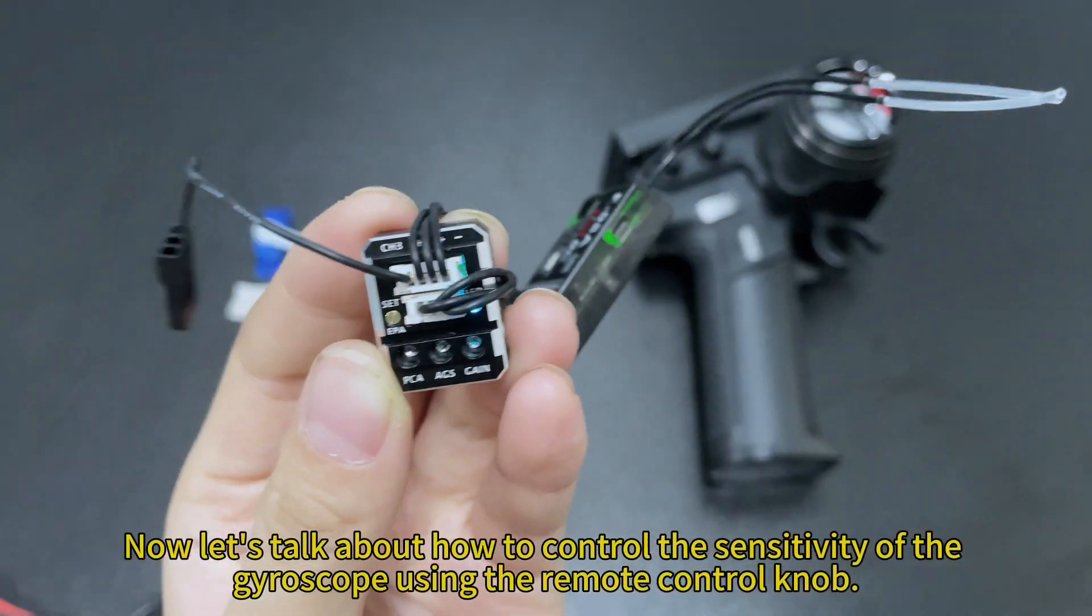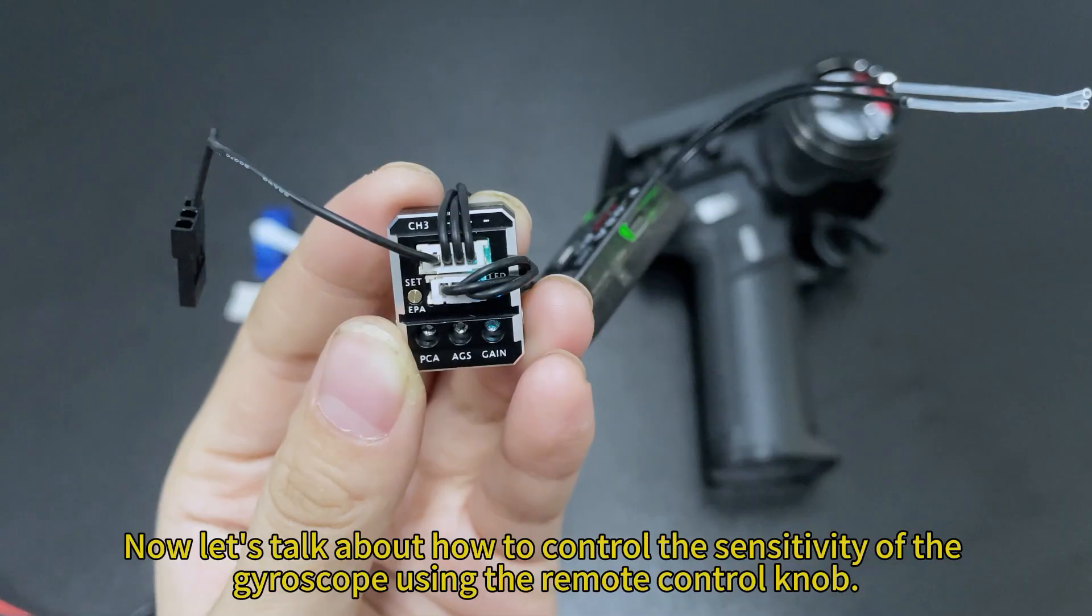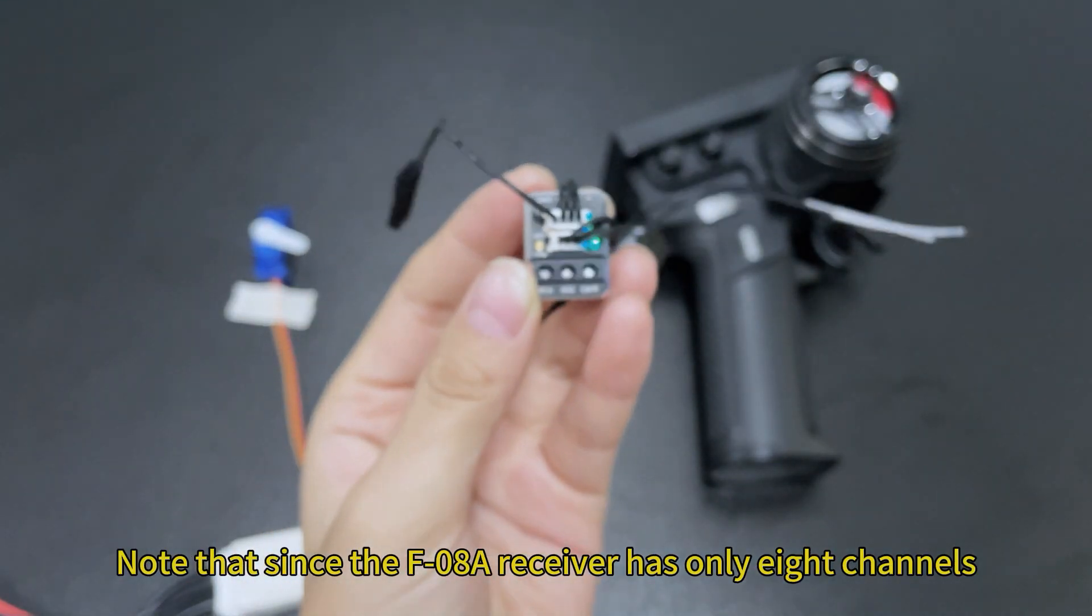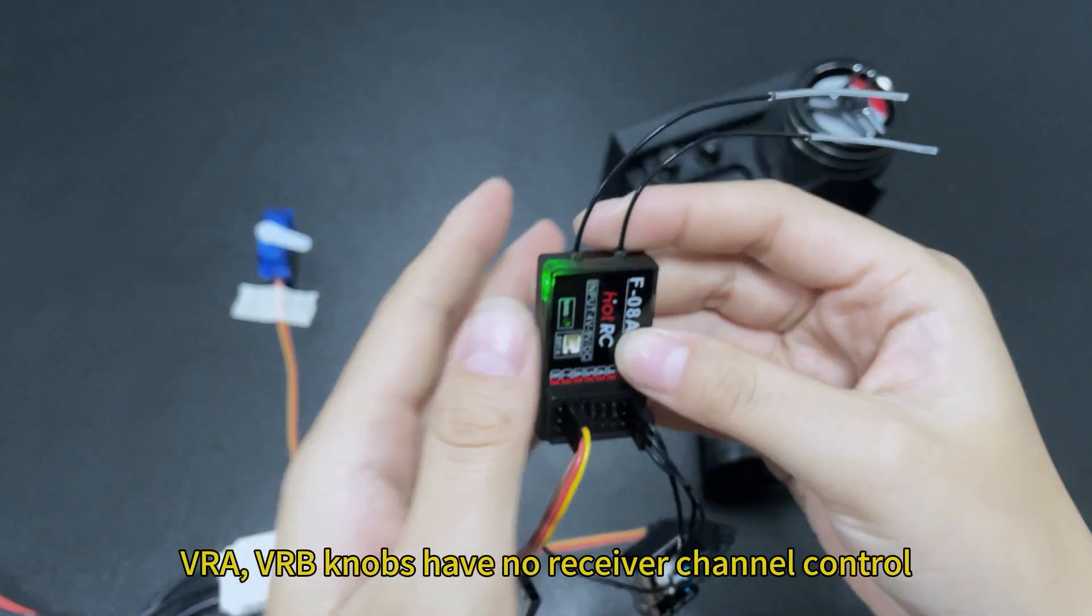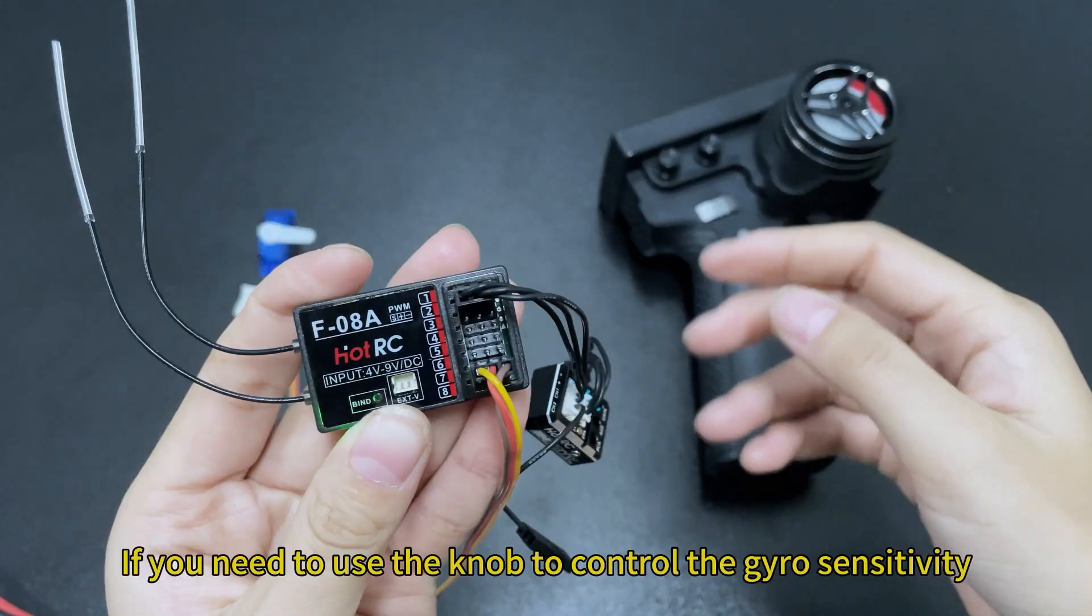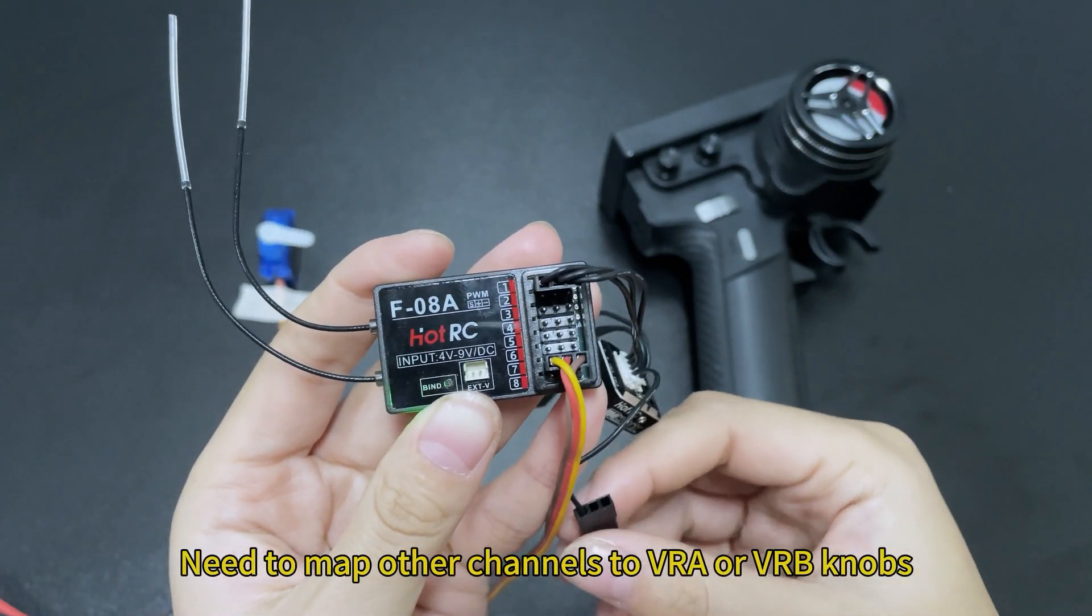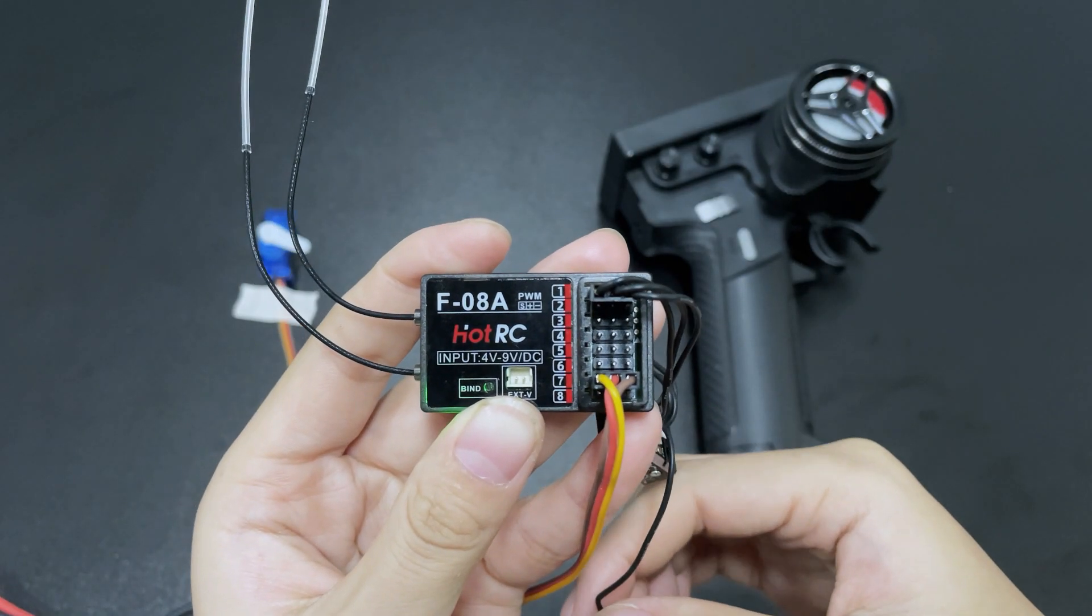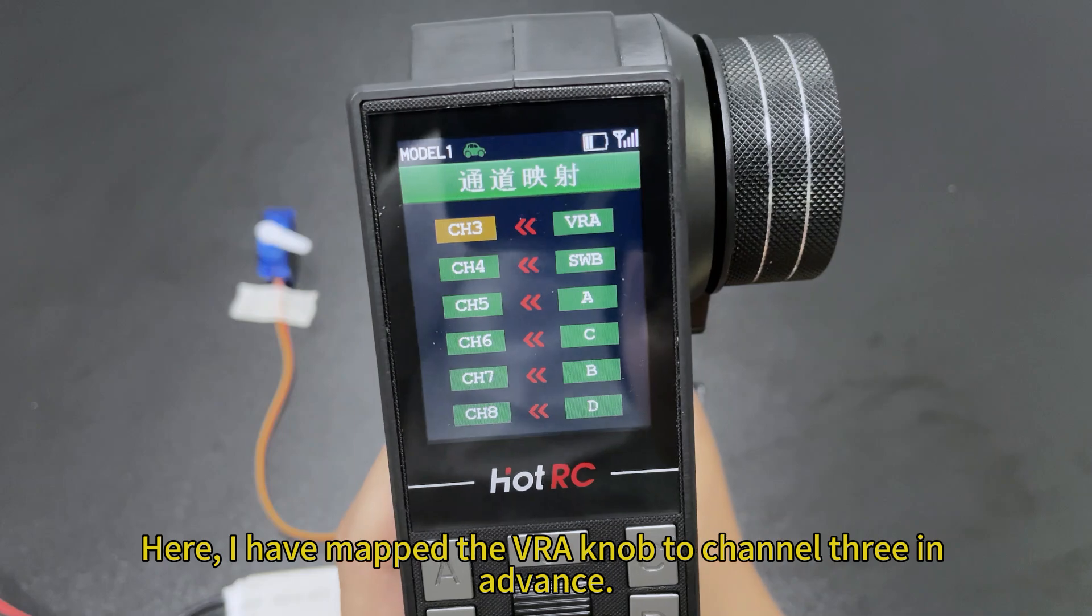Now let's talk about how to control the sensitivity of the gyroscope using the remote control knob. Note that since the F-limbar receiver has only 8 channels, you can see that the receiver has no receiver channel control. If you need to use the knob to control the gyrosensitivity, you need to map other channels to all VRB knobs. Here I have mapped the VRB knob to channel 3 in advance.